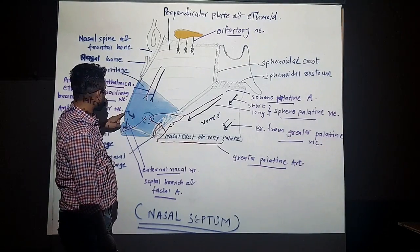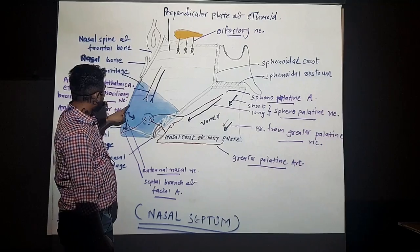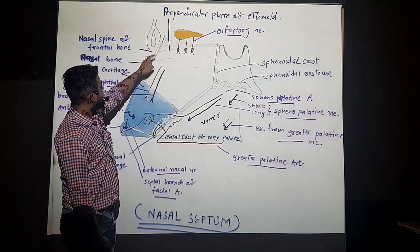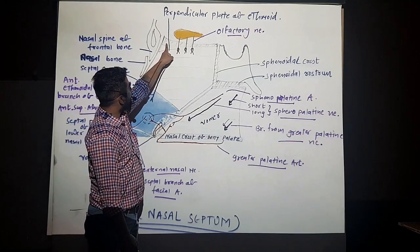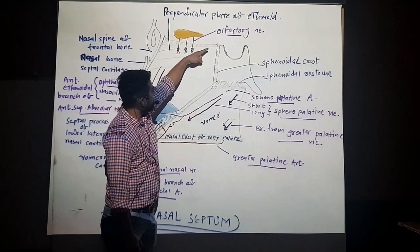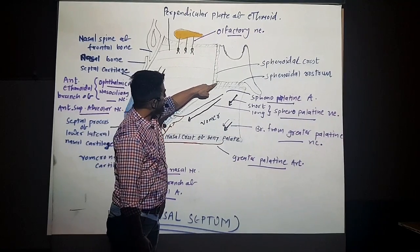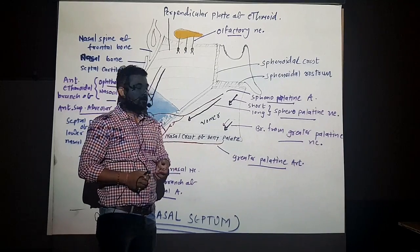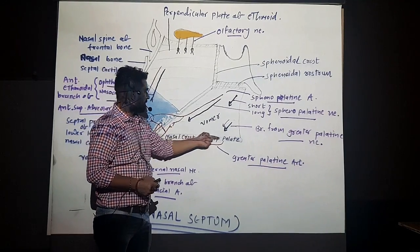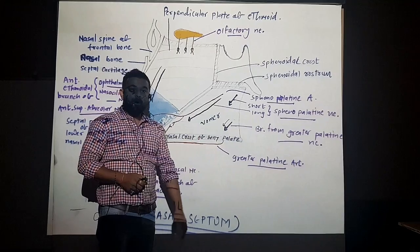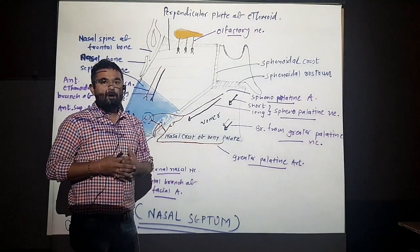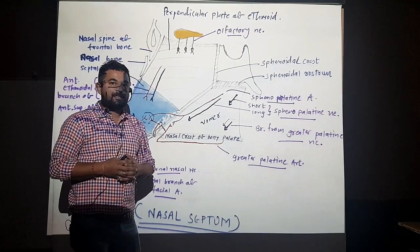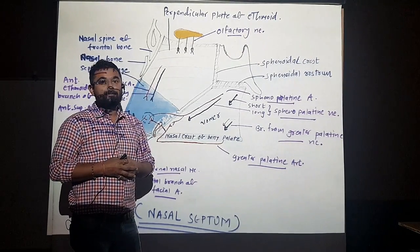The roof is formed by the nasal cartilage, then the nasal bone, then the nasal spine of the frontal bone, then the cribriform plate of the ethmoid bone, then the sphenoidal crest, and the sphenoidal rostrum. The floor is formed by the nasal crest of the bony palate, which is formed by the union of the palatine process of the maxilla and the horizontal plate of the palatine bone.